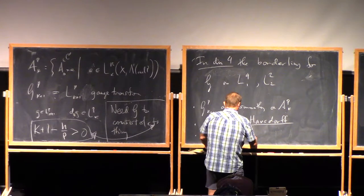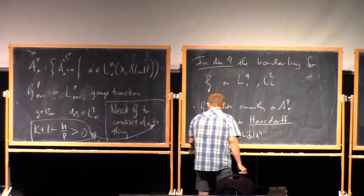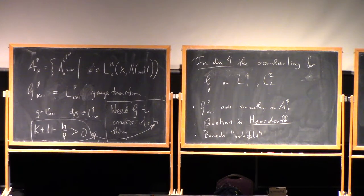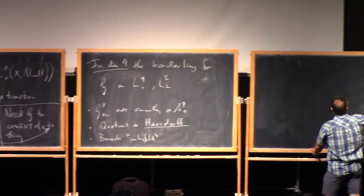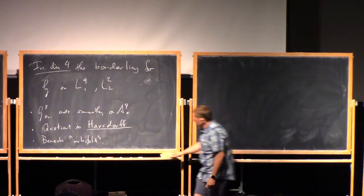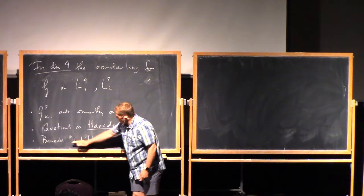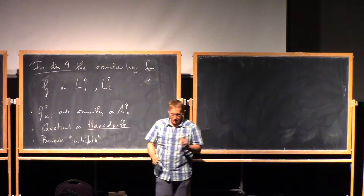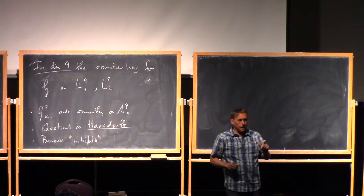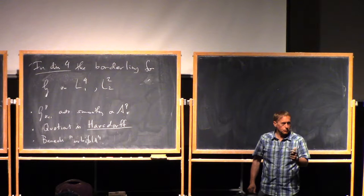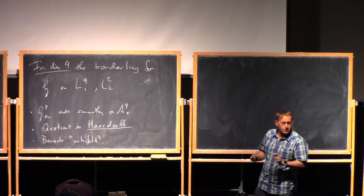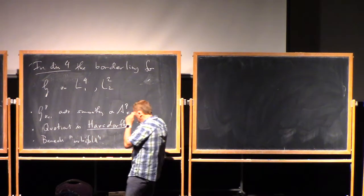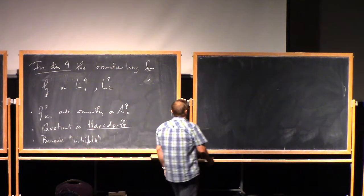And in fact, it's a quotient is a Banach, I'll say orbifold. So what I mean by that, I'm not going to give a precise definition, but what I mean kind of colloquially by that is that it's a Banach space quotient by the smooth action of a finite dimensional Lie group. So you should think of it as a smooth manifold. It has a tiny bit of singularity.